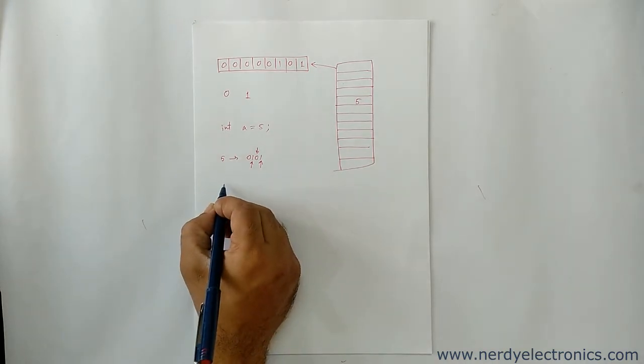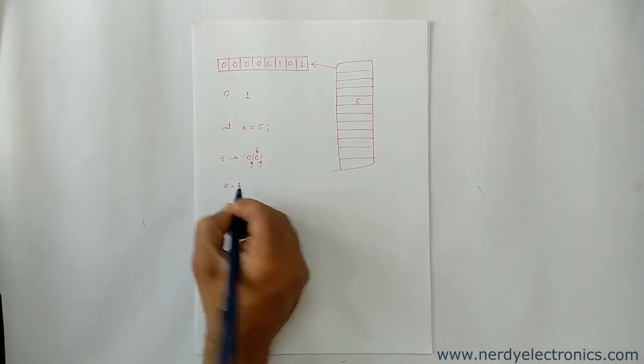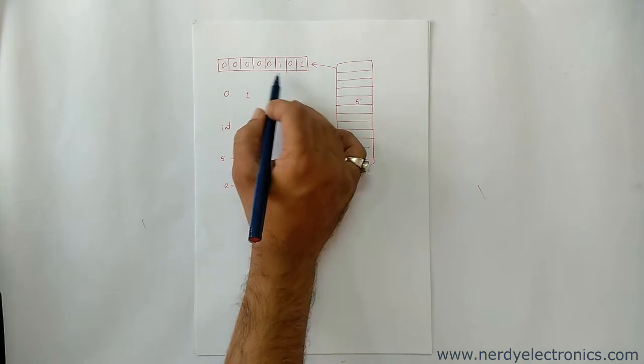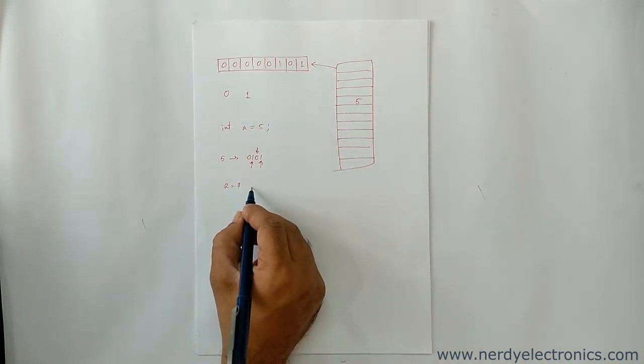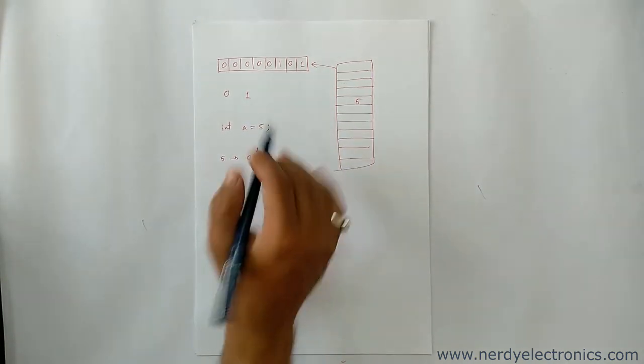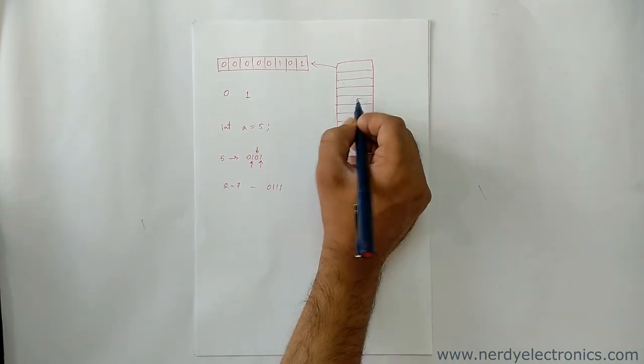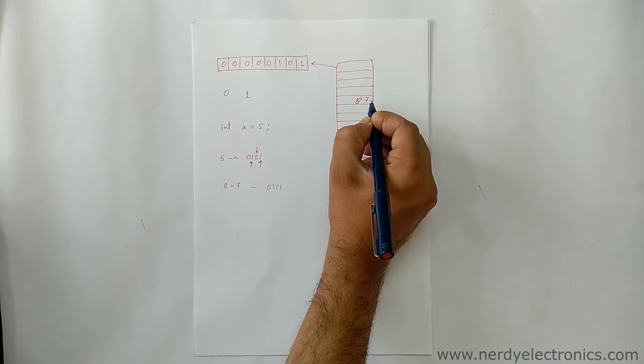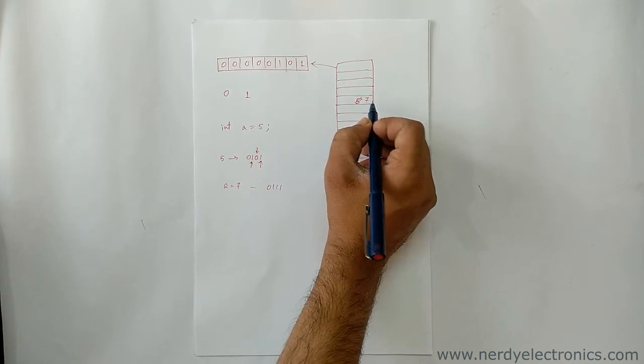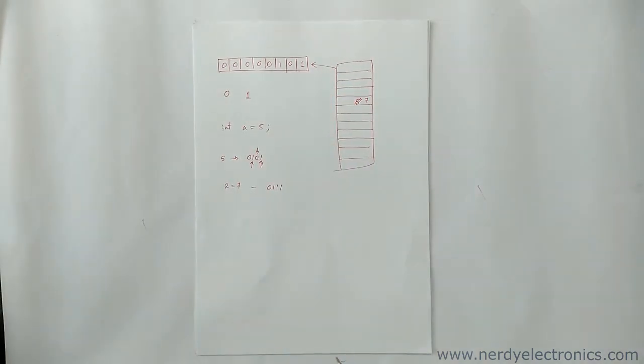Similarly, if we have a equals to 7, so now this value gets replaced by 0 1 1 1. So in turn what happens is this is getting replaced by this value. This value 7 is not stored here as a decimal. It gets converted to binary and then the binary is getting stored.